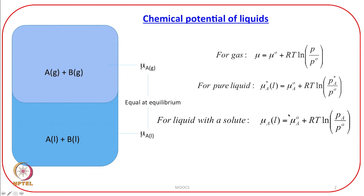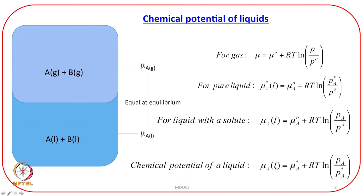The next step is to eliminate μA° from these two equations. The resulting equation is: μA(liquid) = μA*(liquid) + RT log(PA/PA*). This comes by substituting for μA° and rearranging, where μA*(liquid) is the chemical potential of pure liquid A, and μA(L) is the chemical potential of A in the presence of another solute.